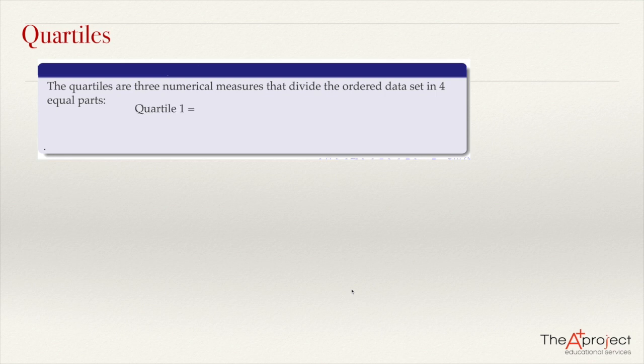We have the first quartile, or quartile 1, that has the property that at most 25% of the data are below this quartile, and at most 75% will be above this quartile. So quartile 1 is the same as the percentile 25.